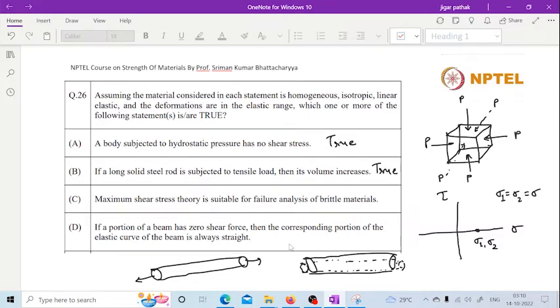Now if we go for the third one, maximum shear stress theory is suitable for brittle materials. This statement is false, because maximum shear stress theory is applicable to ductile materials. While for brittle materials, maximum principal stress theory is applicable. So this statement is false.